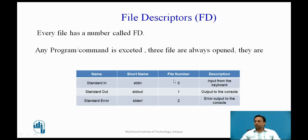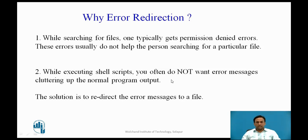Now we will see error redirection. Whenever you execute a program or command at the terminal, three files are always open: standard input, standard output, and standard error. A file descriptor is associated with each of these files. Standard input has file descriptor 0, standard output is 1, and standard error (stderr) is 2. By default, the error stream is displayed on the screen, and error redirection is routing those errors to a file other than the screen.